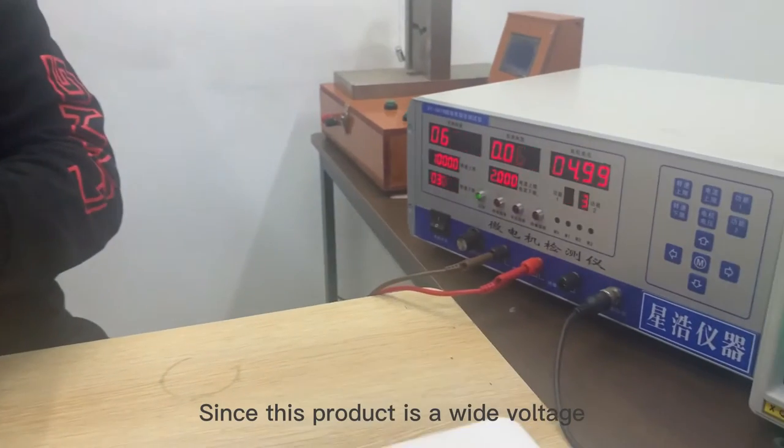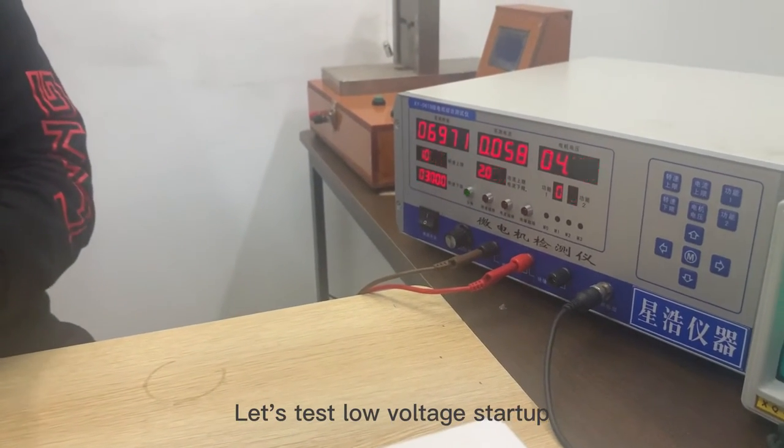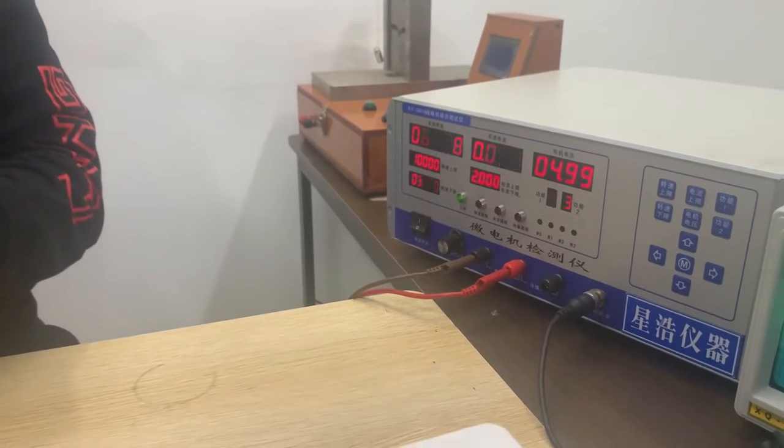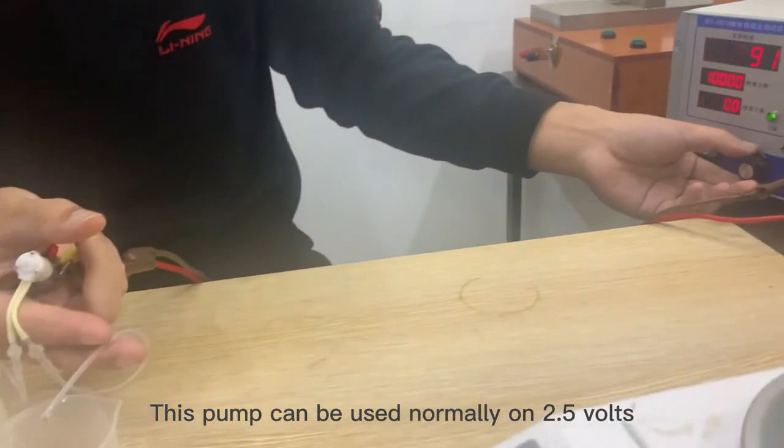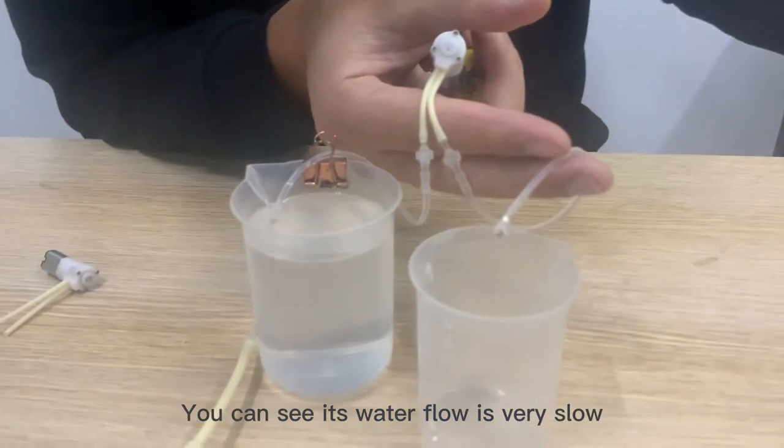Since this pump can be operated with wide voltages, let's test the voltage startup. This pump can be used at a lower voltage, 2.5V. You can see its water flow is very slow but still very stable.